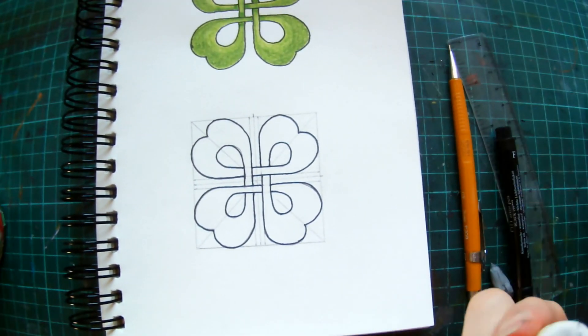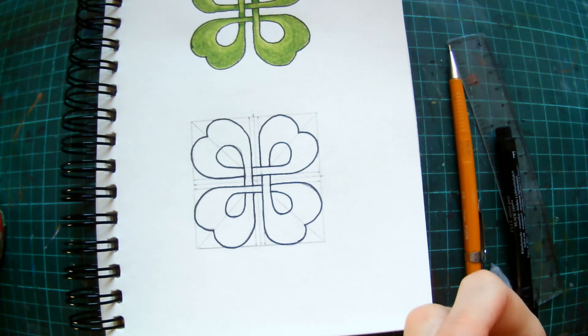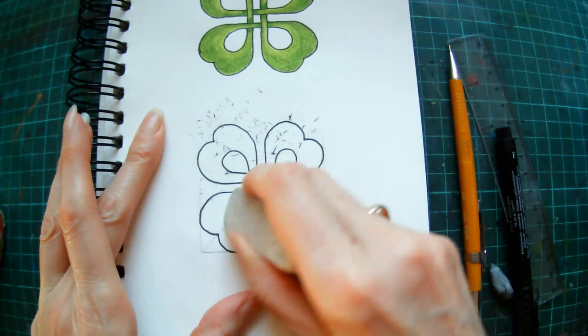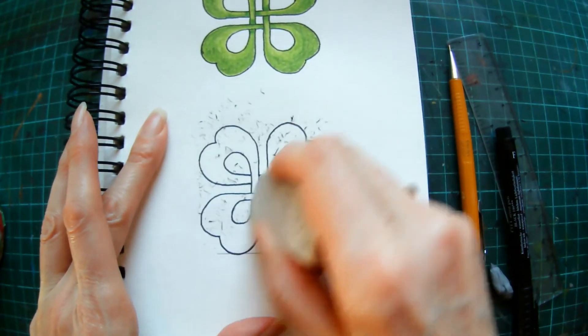And then once you've finished drawing all your lines, you can just rub out all your pencil lines, and then it's ready for you to color in.